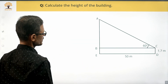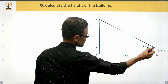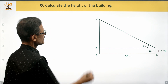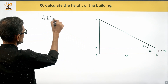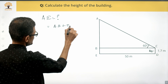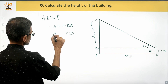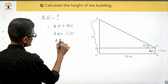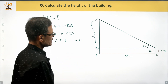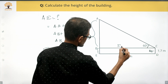CD is the boy whose height is 1.7 meters. At his eye level, he is looking at the top of the building and angle ACB equals 60 degrees. We need to find AE, the full height of the building. AE equals AB plus BE, and BE equals CD. So what we are trying to find is AB plus CD, which is AB plus 1.7 meters. ED equals BC, which is 50 meters.